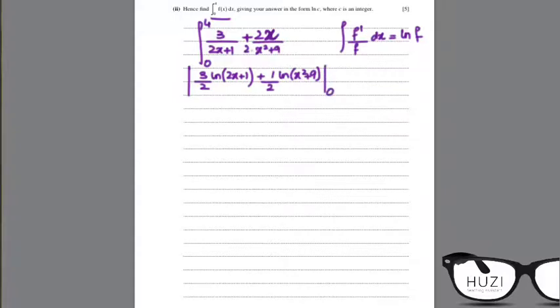From 0 to 4, you plug in 4 and you get 3 over 2 ln 9 plus 1 over 2 ln, 4 squared is 16, 16 plus 9, 25, minus you plug in 0, 3 over 2 ln 0, sorry ln 1, not 9.